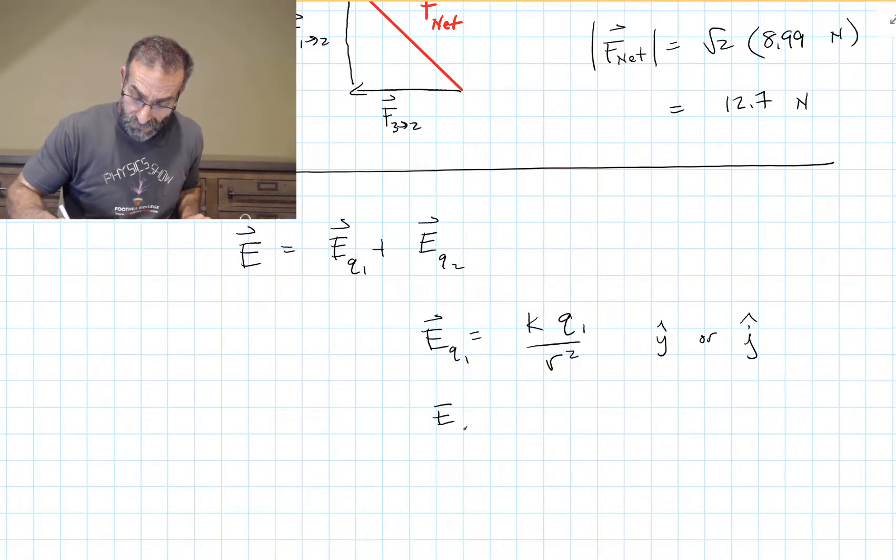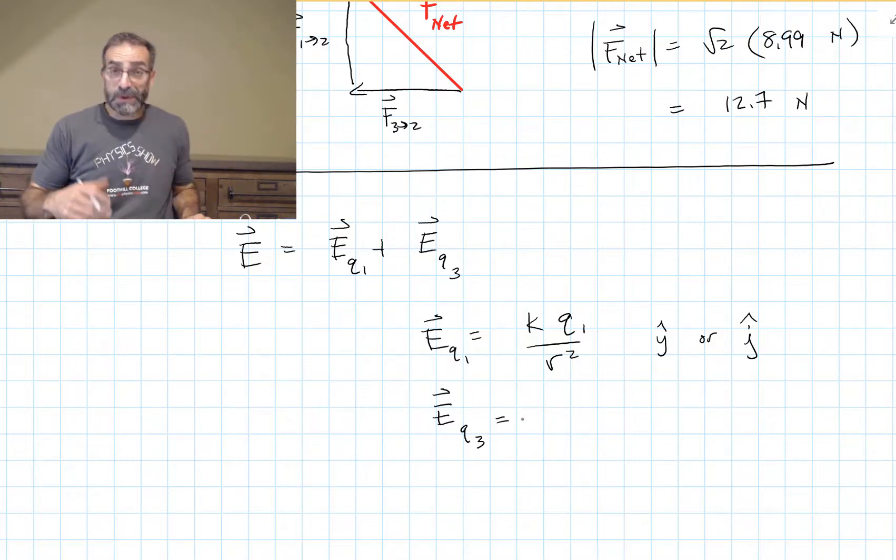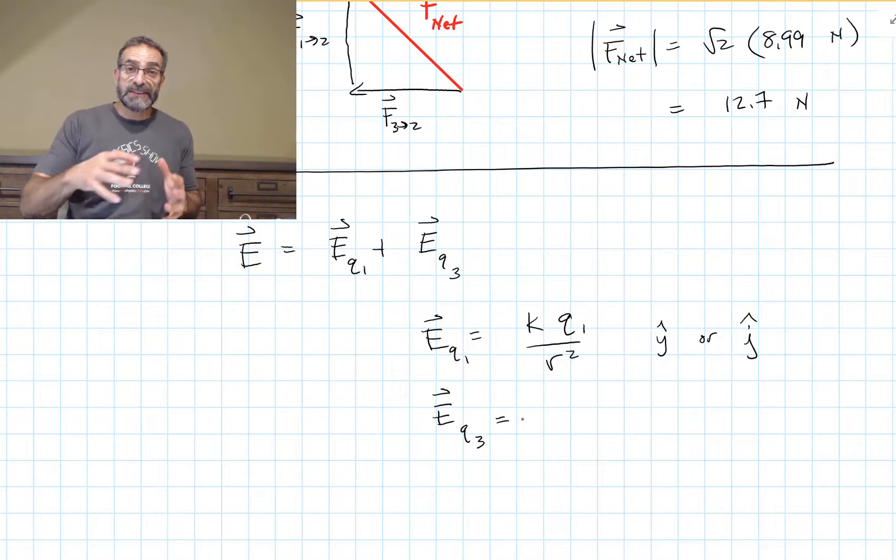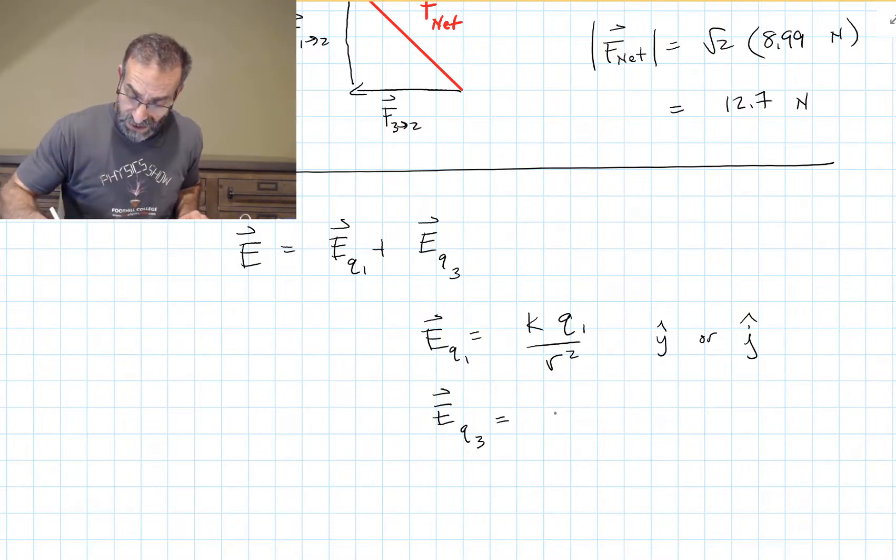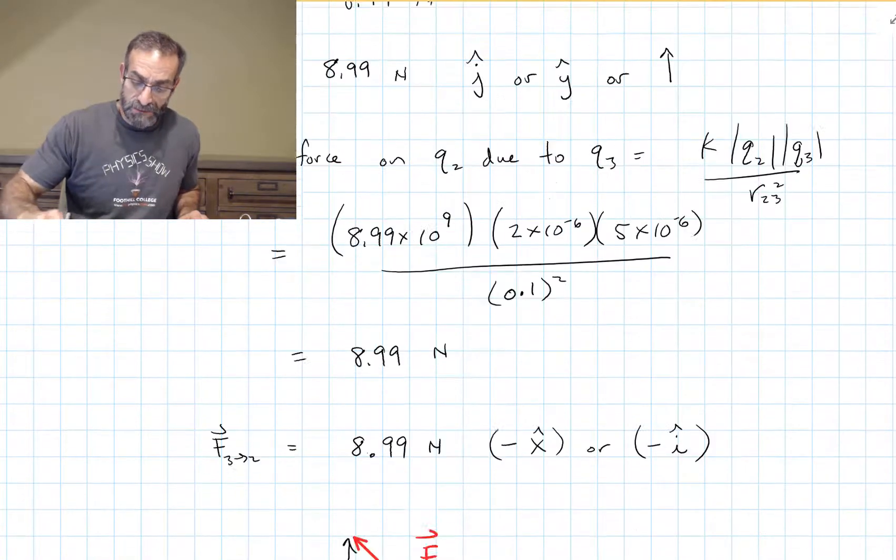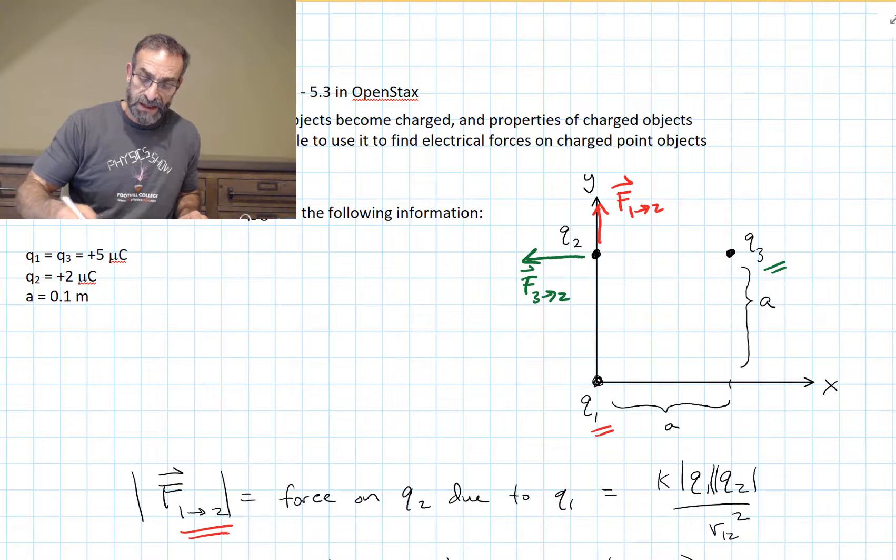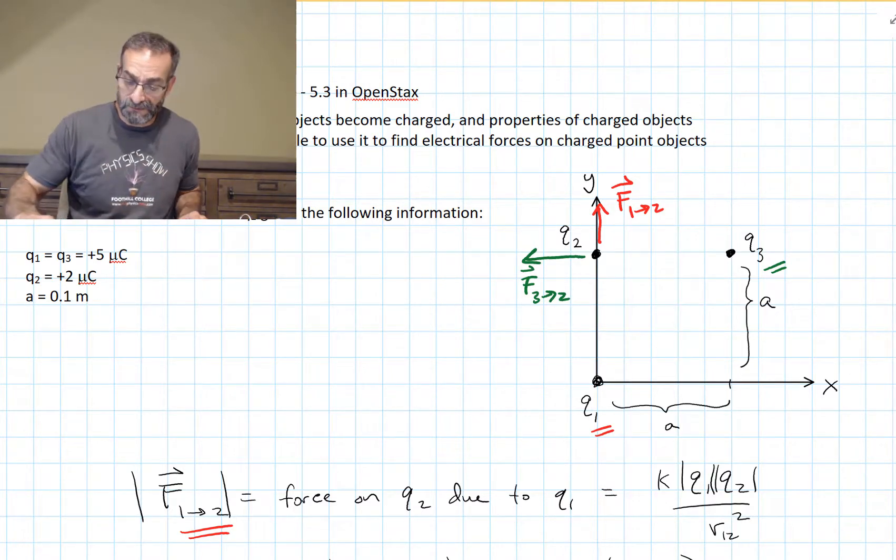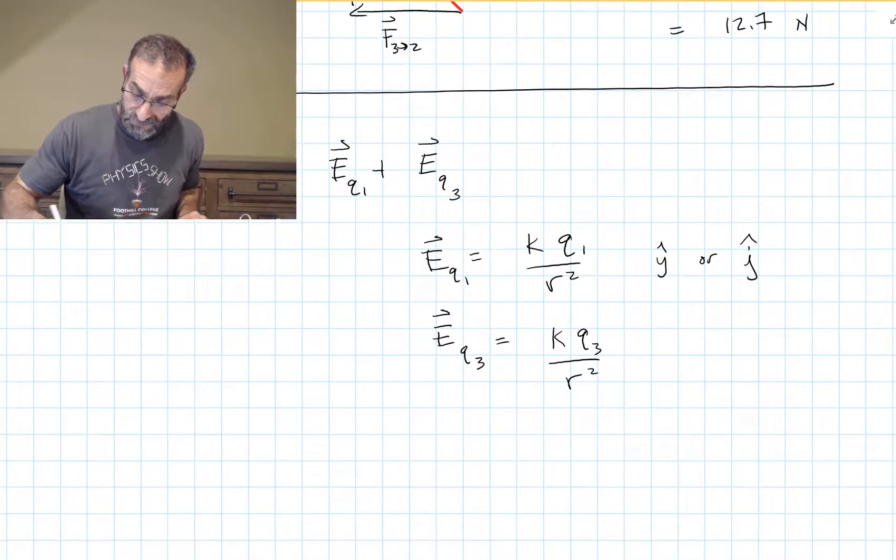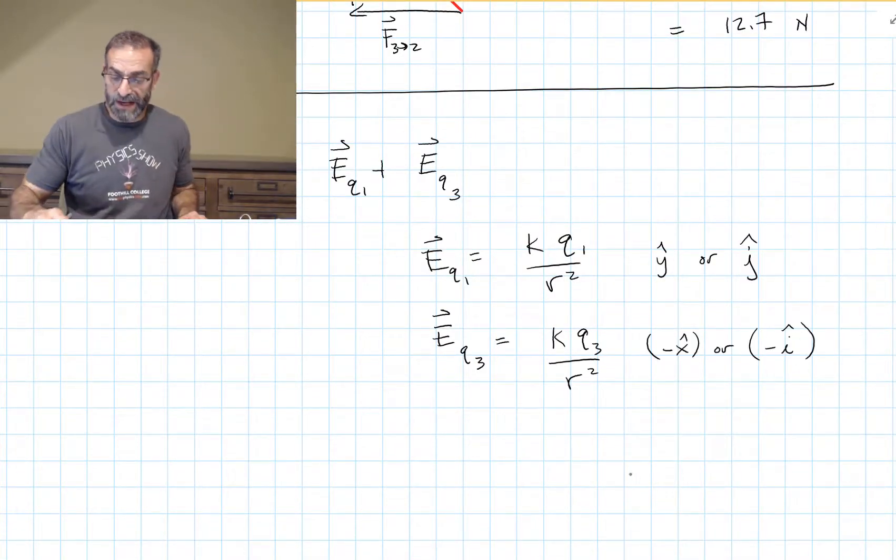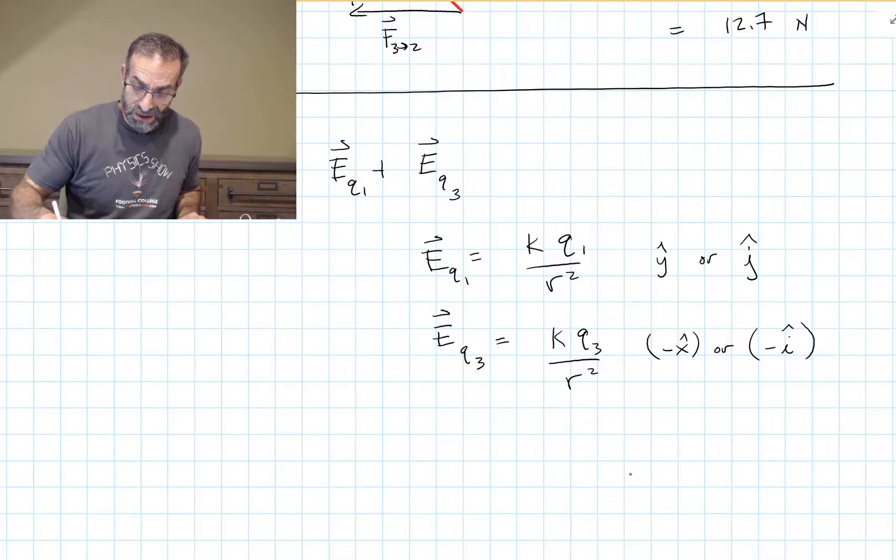The other one, this should be Q3. Q3 is also contributing to the net electric field at the location of Q2. And it's going to be K times Q3 over its distance squared. And it's going to be pointing away from Q3, in the negative X direction. Using our unit vector notation, it'll be minus X hat or minus I hat. Those are unit vectors.